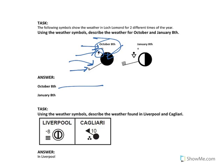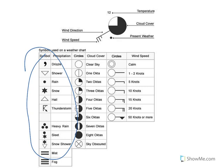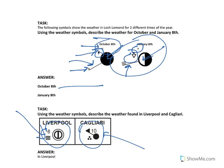Using that same approach, you could do January the 8th — four full ticks, pointing in that direction, with a weather symbol and a temperature reading, plus the amount of cloud cover. Going further, Liverpool has a full weather forecast and Cagliari has a full weather forecast. Looking at the previous slide, we can see all those aspects of the weather for both locations and write a full description of the weather in both places.